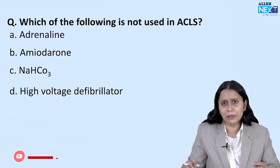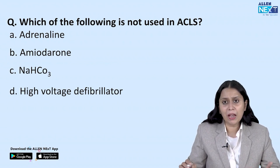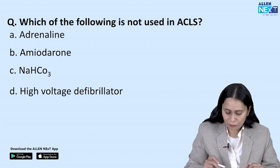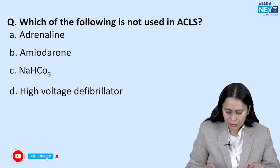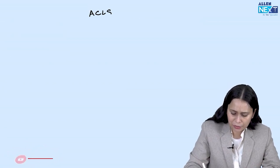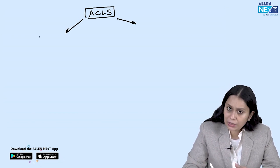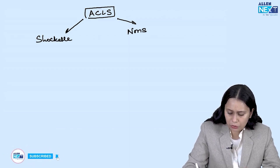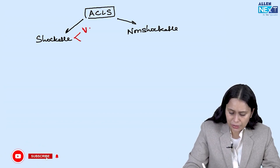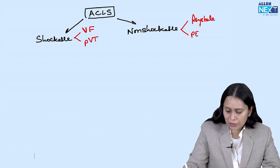Coming to the third question — which of the following is not used in advanced cardiac life support (ACLS)? The options are: adrenaline, amiodarone, sodium bicarbonate, and high-voltage defibrillator. In ACLS, management of cardiac arrest is divided into two depending on the type of rhythm — shockable and non-shockable. Shockable rhythms are ventricular fibrillation and pulseless ventricular tachycardia. Non-shockable rhythms are asystole and pulseless electrical activity.